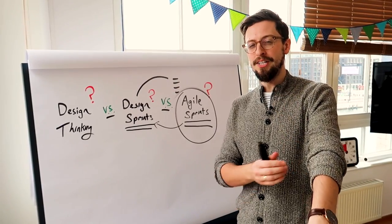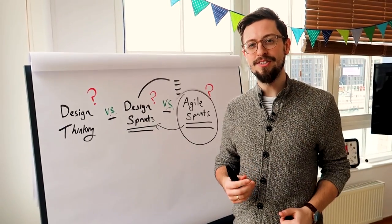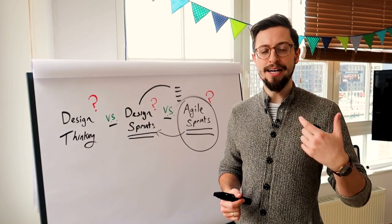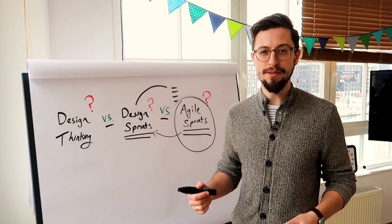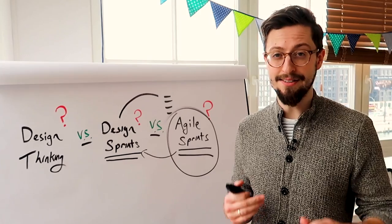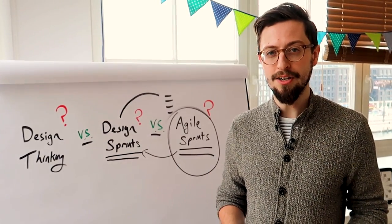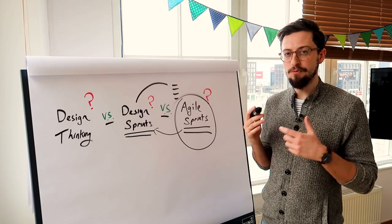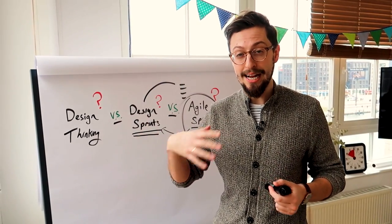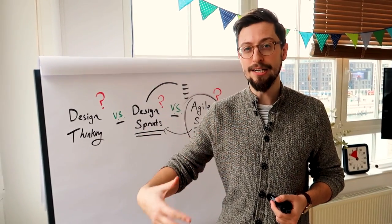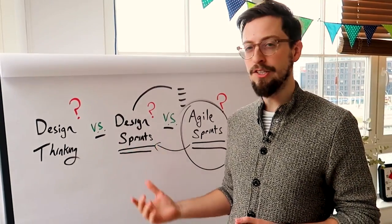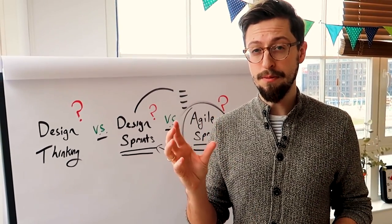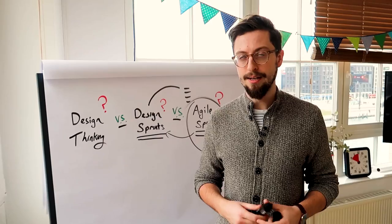Now if you're a product manager watching this and you're saying, 'Well actually in our agile sprints we have ideation built in every six weeks or something like that' — yes, that's something I've seen in a lot of companies. But I just want to clarify that agile is more of a process of executing and actually creating software, whereas design sprints are about taking an idea to something more tangible and validating it.